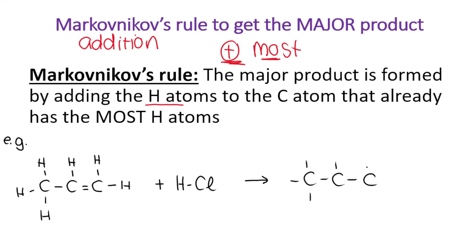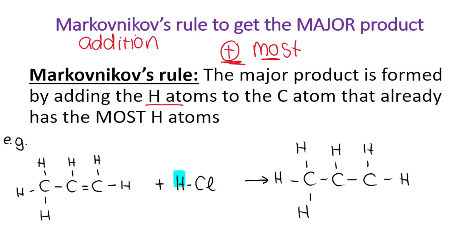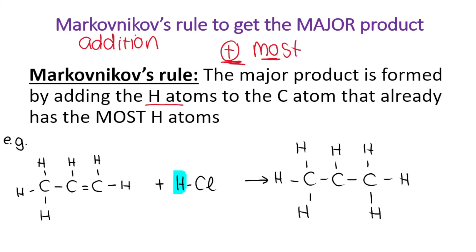I'll fill in the H's that already existed because they're not going anywhere — we are simply adding to the compound. We are breaking the double bond, so this double bond is no longer here; it's now a single bond. The hydrogen goes to the carbon that already has the most hydrogens. Look at this carbon — it has one hydrogen. Look at this carbon — it has two hydrogens. So we need to add the hydrogen to the carbon that has the most, the one at the end. I'm going to put the hydrogen over here, which means the chlorine atom goes over here. This is the major product — 2-chloropropane.